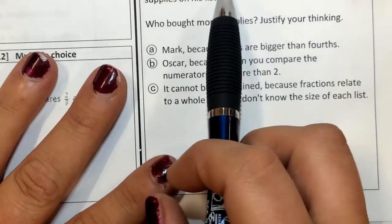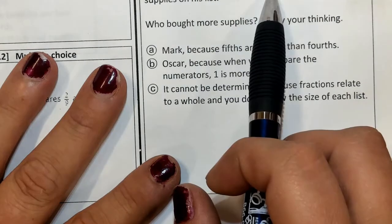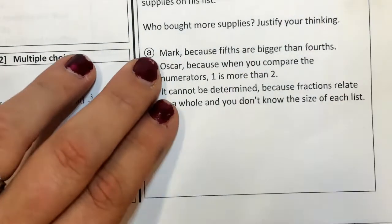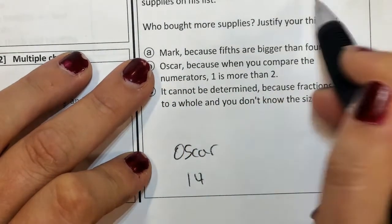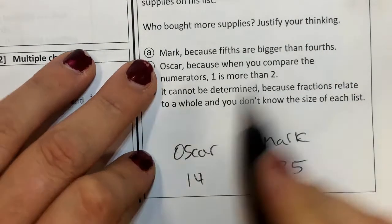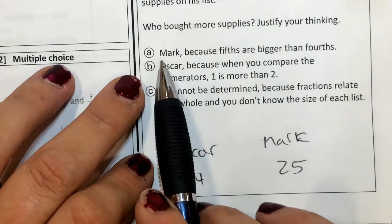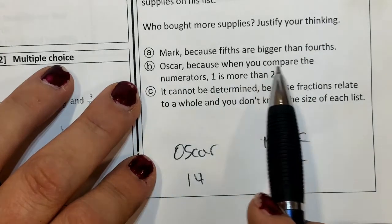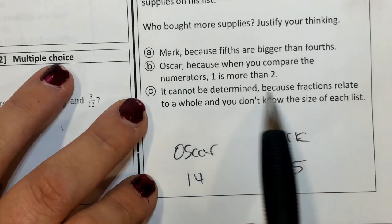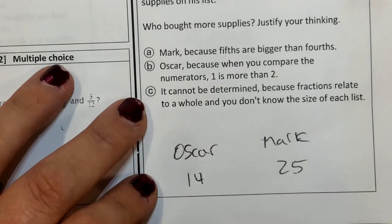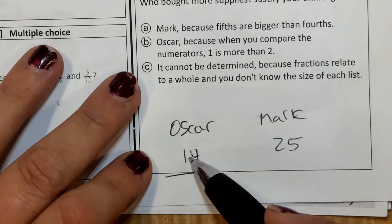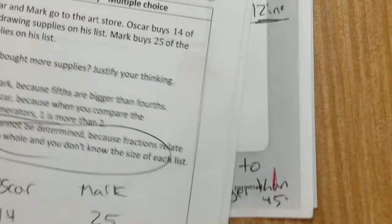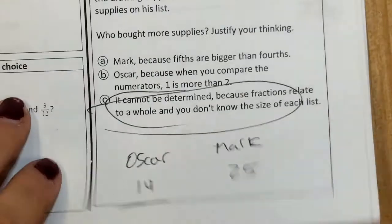Number 5, Oscar and Mark go to the art store. Oscar buys 14 of the drawing supplies on his list. Mark buys 25 of the supplies on his list. Who bought more supplies? Oscar buys 14, Mark buys 25. Let's look at our answers. It cannot be determined because fractions relate to a whole and you don't know the size of each list. Can I make this into fractions yet? No. I know that Oscar bought 14 and Mark bought 25, but how much was on their list? We don't know. The trick questions. This spiral review has a lot of trick questions in it. It gets your brains going.